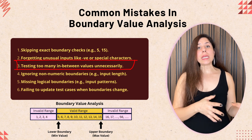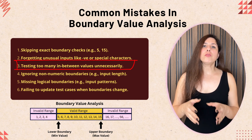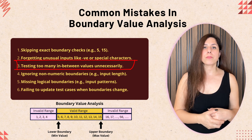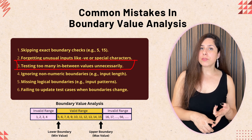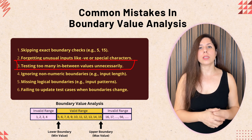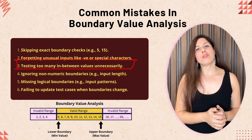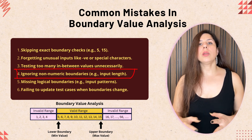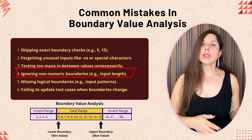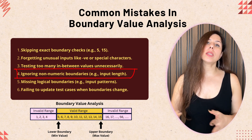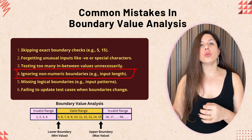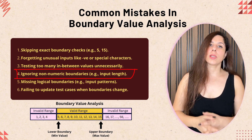Third, testing too many in-between values — boundary testing focuses on edges, so it's not necessary to test every single value within the range. If the boundary values are 5 and 15, testing each value between 5 and 15 is a waste of time and doesn't add much value. Stick to the boundary points to keep testing efficient. Fourth, ignoring non-numeric boundaries — boundaries aren't always numerical; they can be logical limits too. For example, a form that limits input length to 100 characters also has boundaries that should be tested. Don't limit your testing just to numeric ranges.